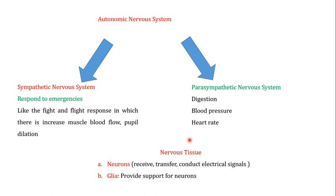One important term is nervous tissue. Nervous tissue is neurons plus glia. The function of the neuron is to receive, transfer, and conduct electrical signals, while the glia provides support for the neurons. In the next video, we'll be talking in detail about how the message is transferred from the pre-synaptic neuron into the post-synaptic neuron, how membrane polarity is controlled, and the concepts of polarization and depolarization.